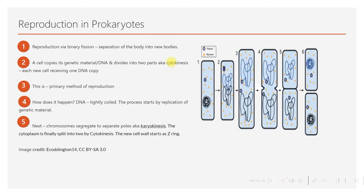Prokaryotes reproduce through a cell division process called binary fission, and there are different types. Like mitosis in eukaryotes, this process involves copying the chromosome and separating one cell into two. The prokaryotic cell's DNA is tightly coiled prior to splitting. The process starts by creating a replicate of the genetic material. Next, the chromosome segregates to separate poles of the cell — a process called karyokinesis. The cytoplasm is then cleaved into two by a new cell membrane forming — cytokinesis. A cell wall also forms if the original parent cell had one, often starting as a Z-ring formed by the cytoskeleton.